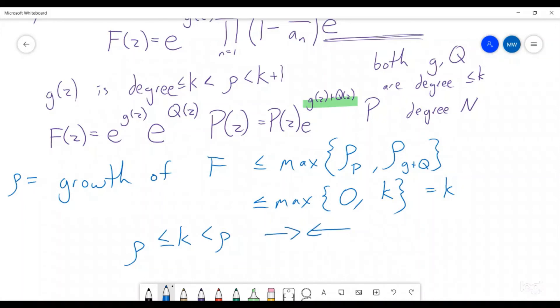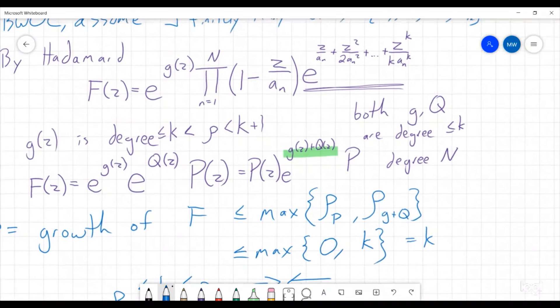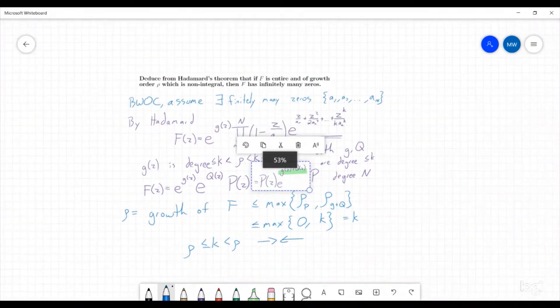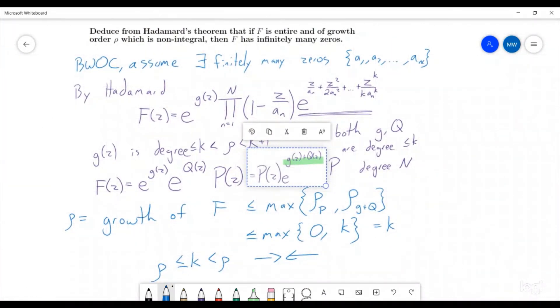And so all of that together tells us that therefore, if f is entire and of growth order which is not an integer, then f must have infinitely many zeros, because otherwise it leads to a contradiction. So the only entire functions that have growth order of an integer have finitely many zeros. I hope that was a useful video for you. If it was, please let me know what other videos you would like to see me do. I hope you have a great rest of your day and good luck with all of your math.